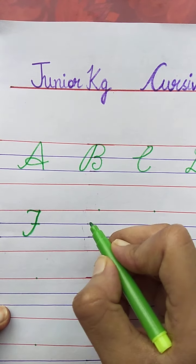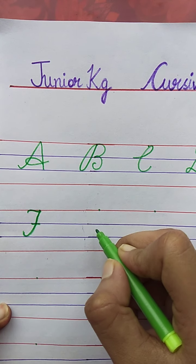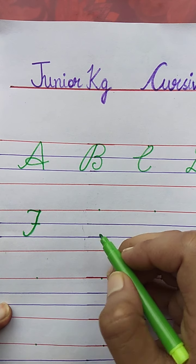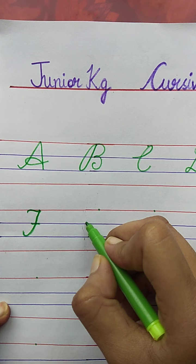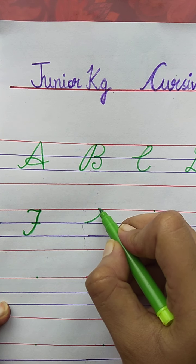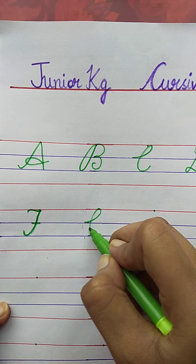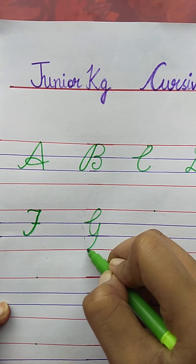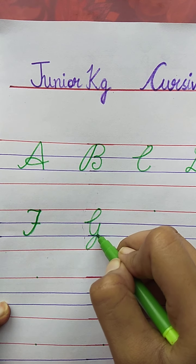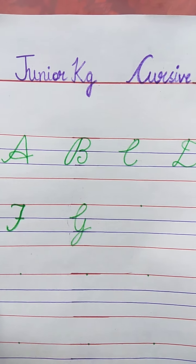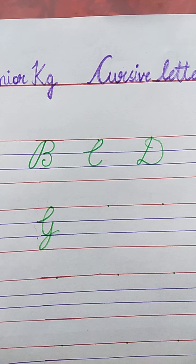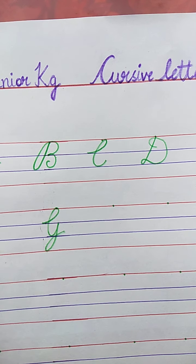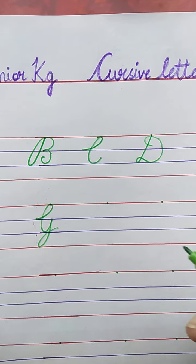Tell me the next letter. Very good. G. G for Grapes. Draw a curve, semi-circle, slanting line, and curve line. G for Grapes. The spelling of Grapes is G-R-A-P-E-S. Grapes.